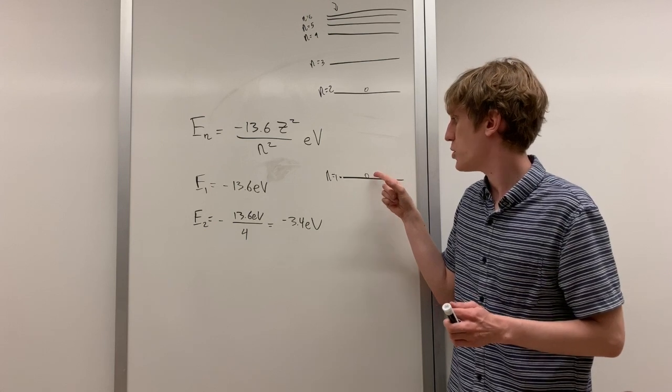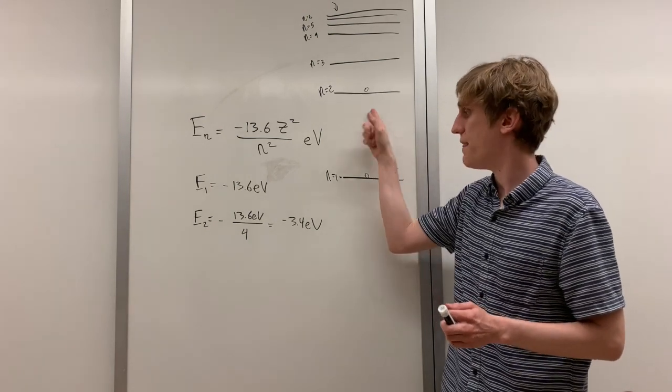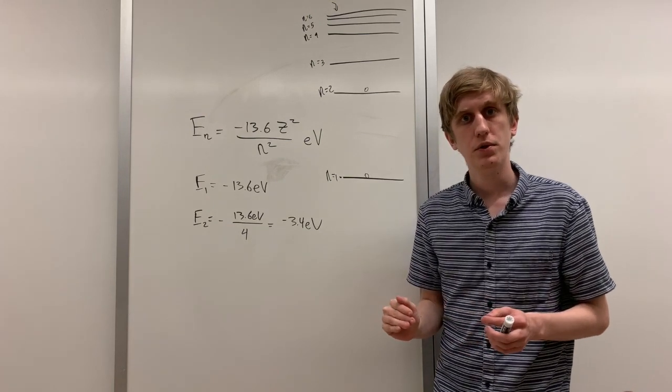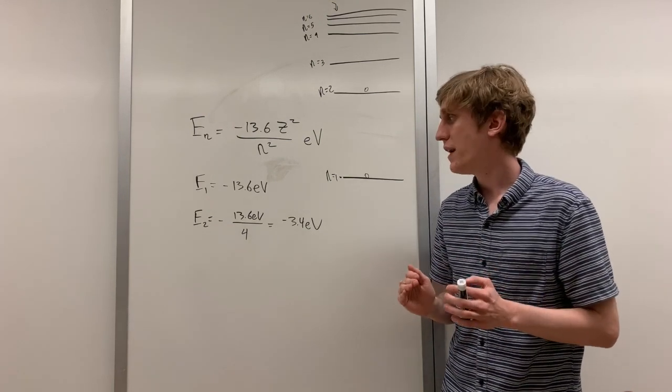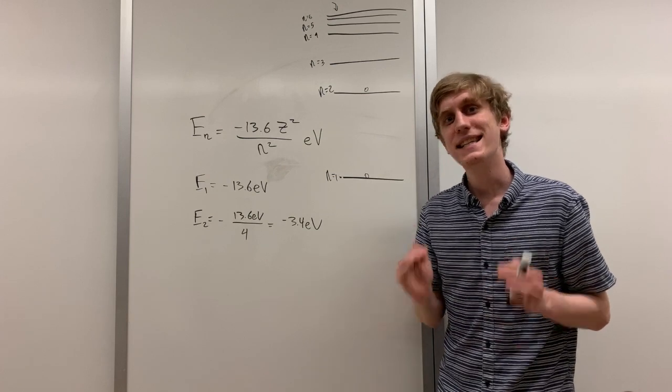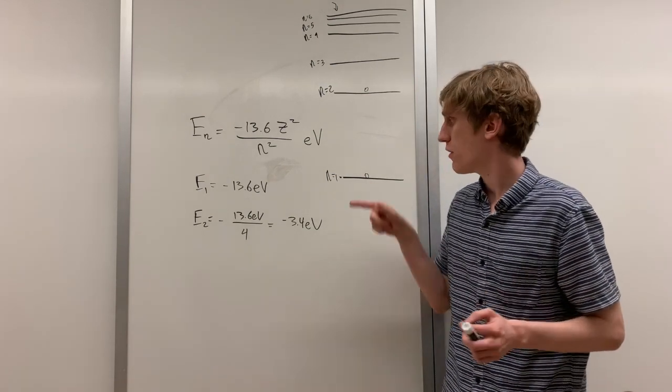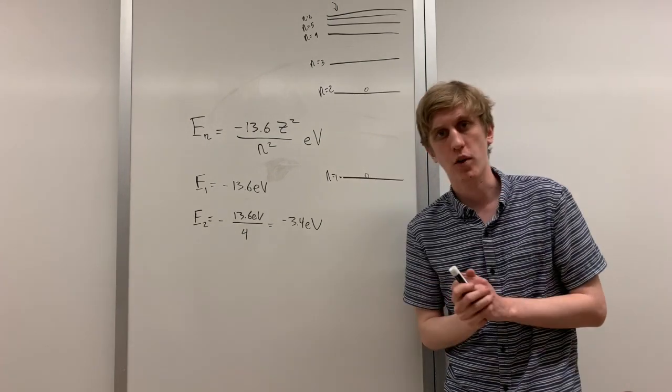So the difference in energy between this energy level and this energy level is 10.2 electron volts. In other words, the electron has to gain exactly 10.2 electron volts of energy in order to jump from the first orbital to the second orbital.